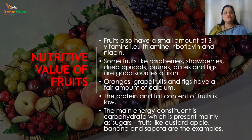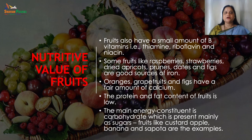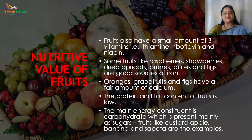Fruits also have a small amount of B vitamins — that is thiamine, riboflavin and niacin. Some fruits like raspberry, strawberries, dried apricots, prunes, dates and figs are good sources of iron. Oranges, grapefruits and figs have a fair amount of calcium. The protein and fat content of fruits is low; the main energy constituent is carbohydrate, present mainly as sugars — fruits like custard apple, banana and sapota are examples. Phenolics in fruits are a major determinant for reducing the risk of different degenerative diseases.